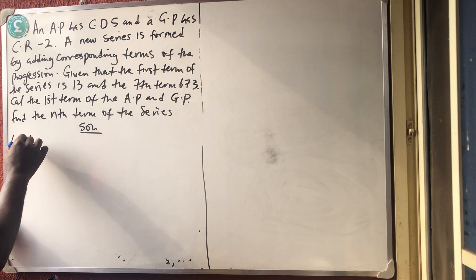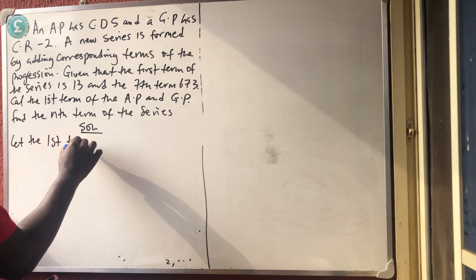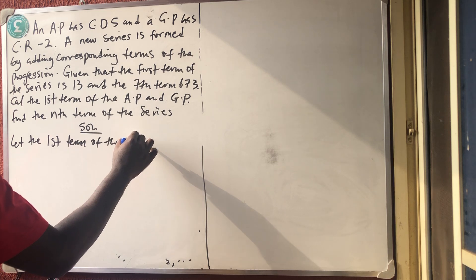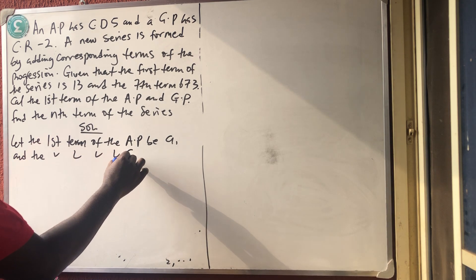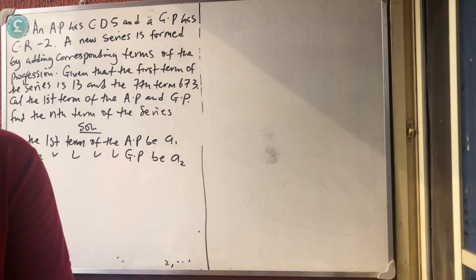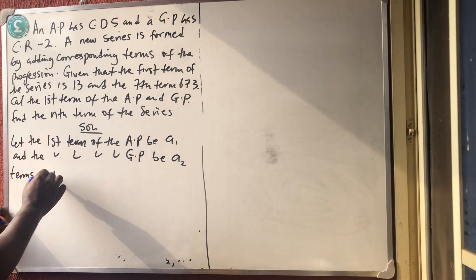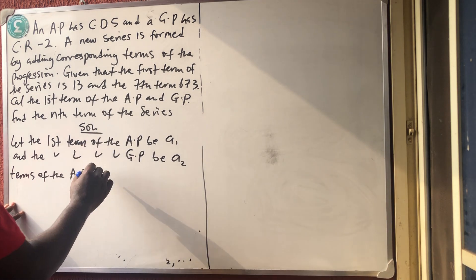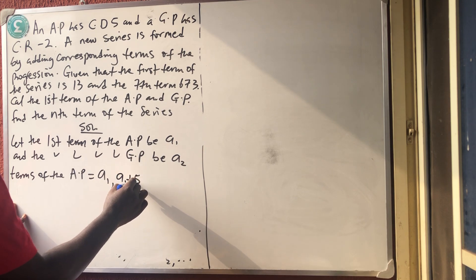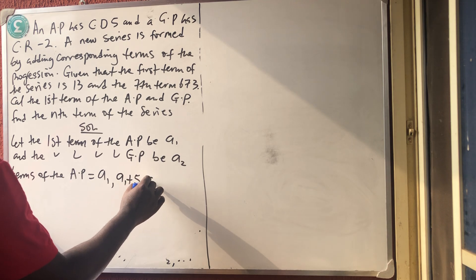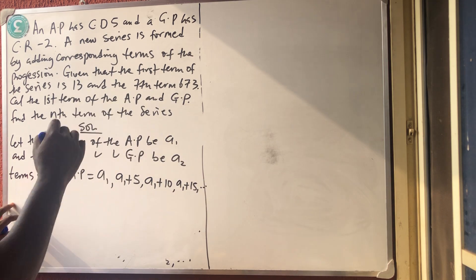Let the first term of the AP be A1 and the first term of the GP be A2. Let's get the terms of the AP. The first term is A1, the second term is A1 plus the common difference, so A1 plus 5. The next term is A1 plus 10, then A1 plus 15, and so on.